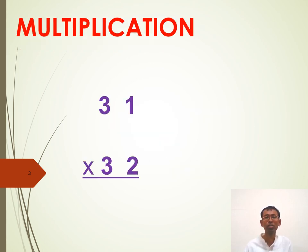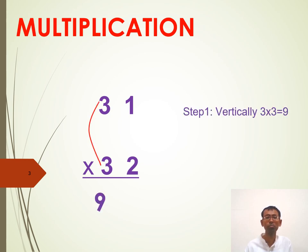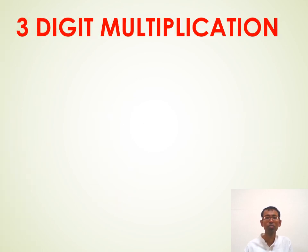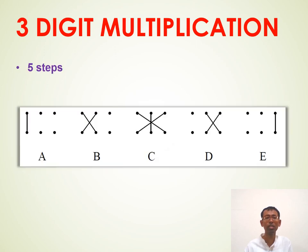Multiplication — we have done this so many times. The rule is vertically and crosswise. I'll skip this; you can pause and take a look if you want. For three-digit multiplication, we have five steps instead of three. I'll skip this as well.